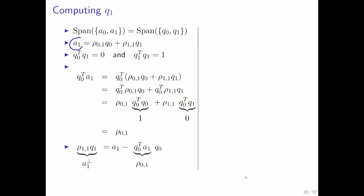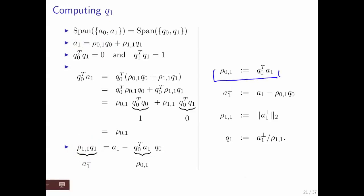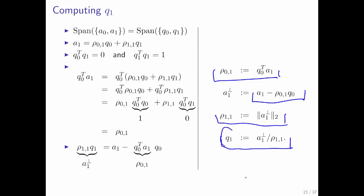That gives us a formula for computing rho_{0,1}, computed in exactly the same way as the Gram-Schmidt process in the last unit. At that point, we know a1, we know rho_{0,1}, and we know q0. Therefore we can write rho_{1,1} times q1 as a1 minus the component in the direction of q0, leaving us with the component perpendicular. To compute q1, we compute rho_{1,1} as the length of a1_perp, then divide a1_perp by that length. This motivates the steps: compute the inner product of q0 with a1, compute the component orthogonal to q0, compute the length of a1_perp, and scale it to length 1 to get q1.